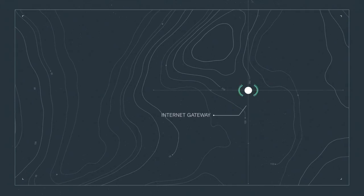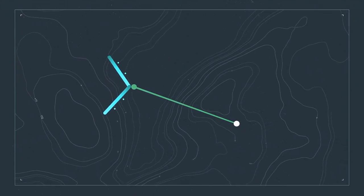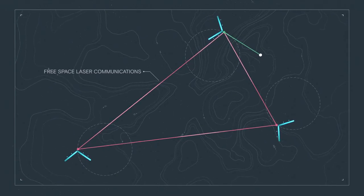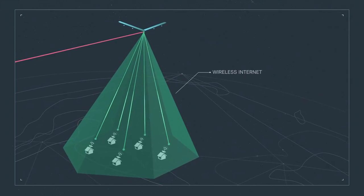A ground station will transmit a radio internet signal to a mother aircraft, and that will then feed other aircraft in the constellation using laser technology. And they will provide you radio internet coverage.